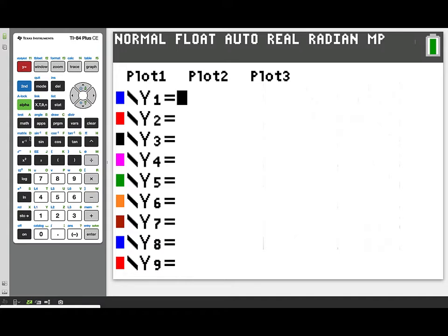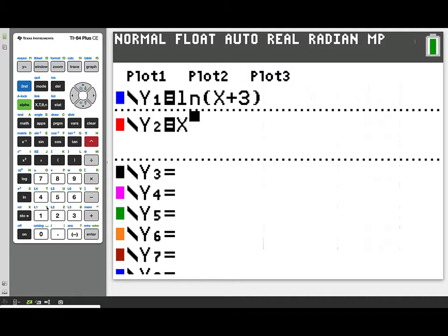Let's start out by taking a look at the two functions whose graphs form the region involved in this question. The first function was labeled f of x, and we'll store that in y1. That function is the natural log of the quantity x plus 3. The second function, labeled g in the problem, we'll store in y2, and that function is x to the fourth plus 2 times x cubed.